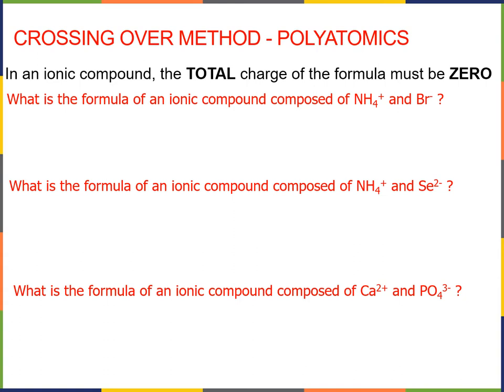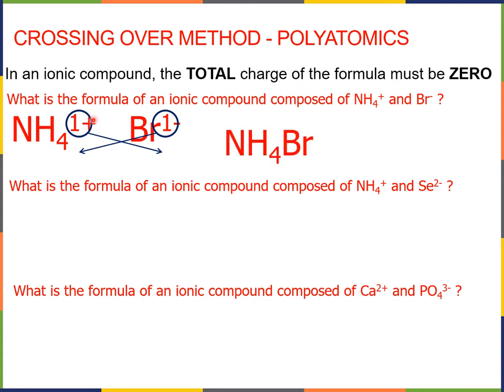So let's start with this first question up here. What is the formula of an ionic compound composed of NH4 plus, ammonium, and bromide, Br minus? We'll do the same thing here. We have NH4 plus 1 and Br minus 1. We do our crossing over. We bring the 1 from the ammonium to the bromine, and the 1 from the bromide down to the ammonium. We get NH4 1, Br 1, or just NH4Br.